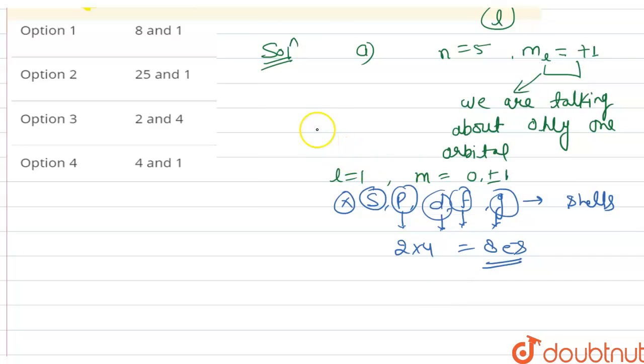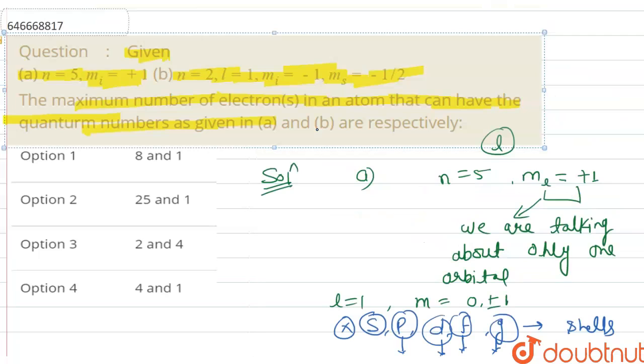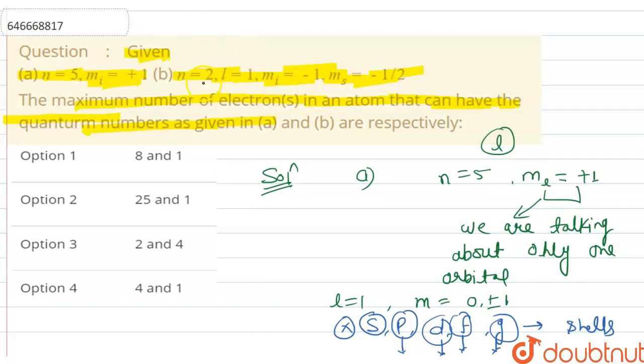There are four quantum numbers: n equals to 2, l equals to 1, ml equals to minus 1, and ms equal to minus half. So n equals to 2, that means l equals to 1.